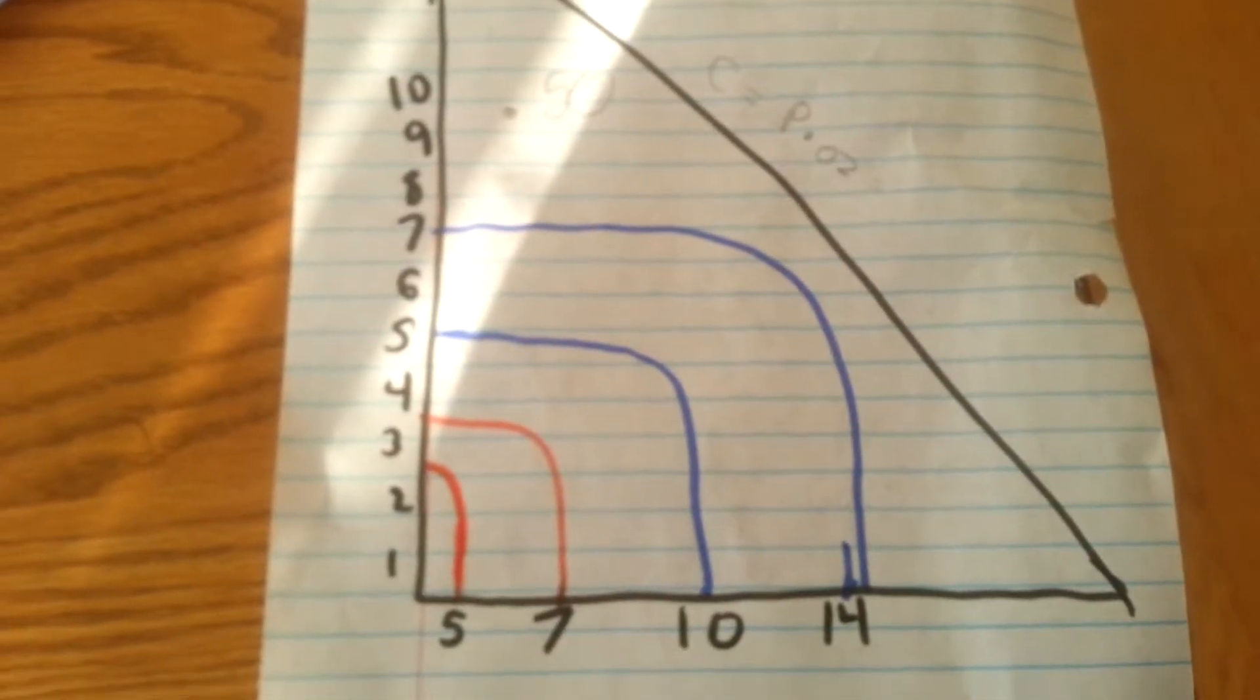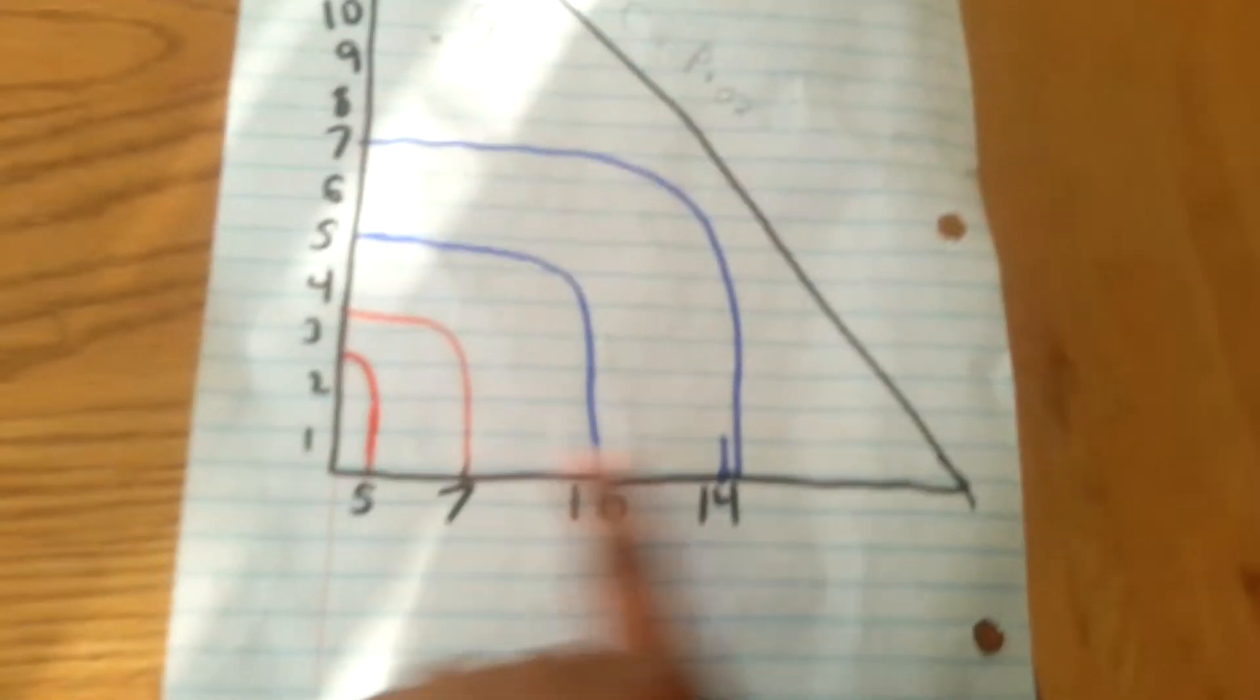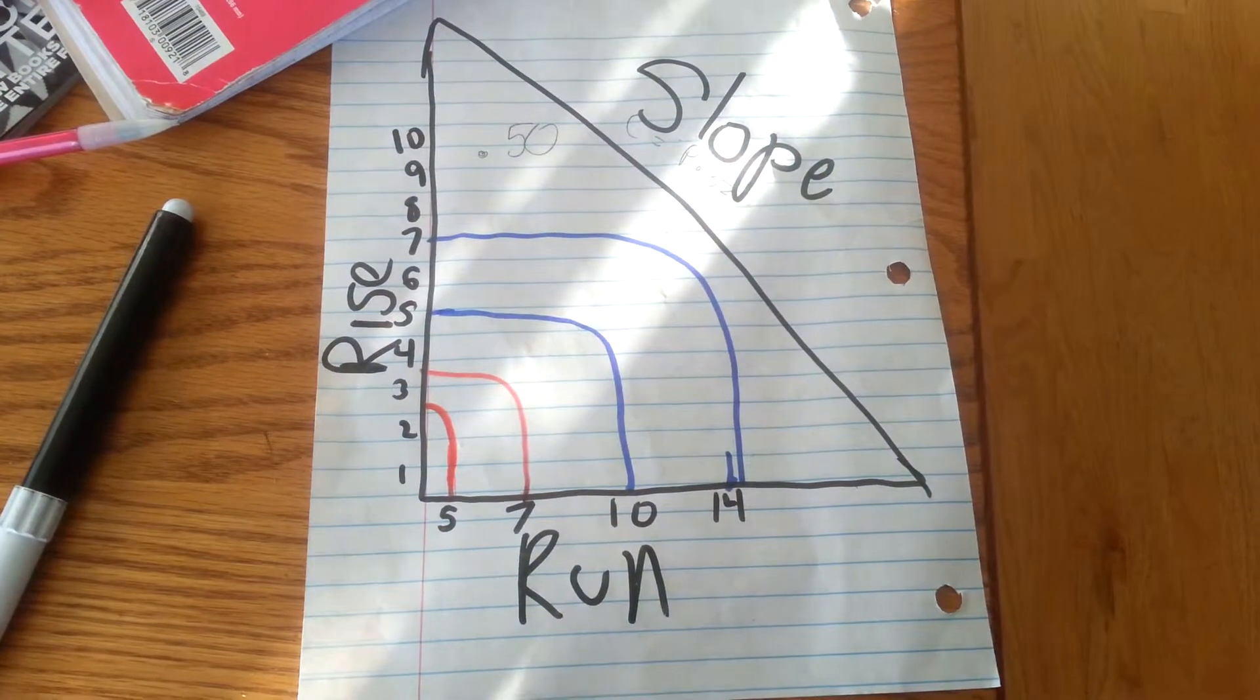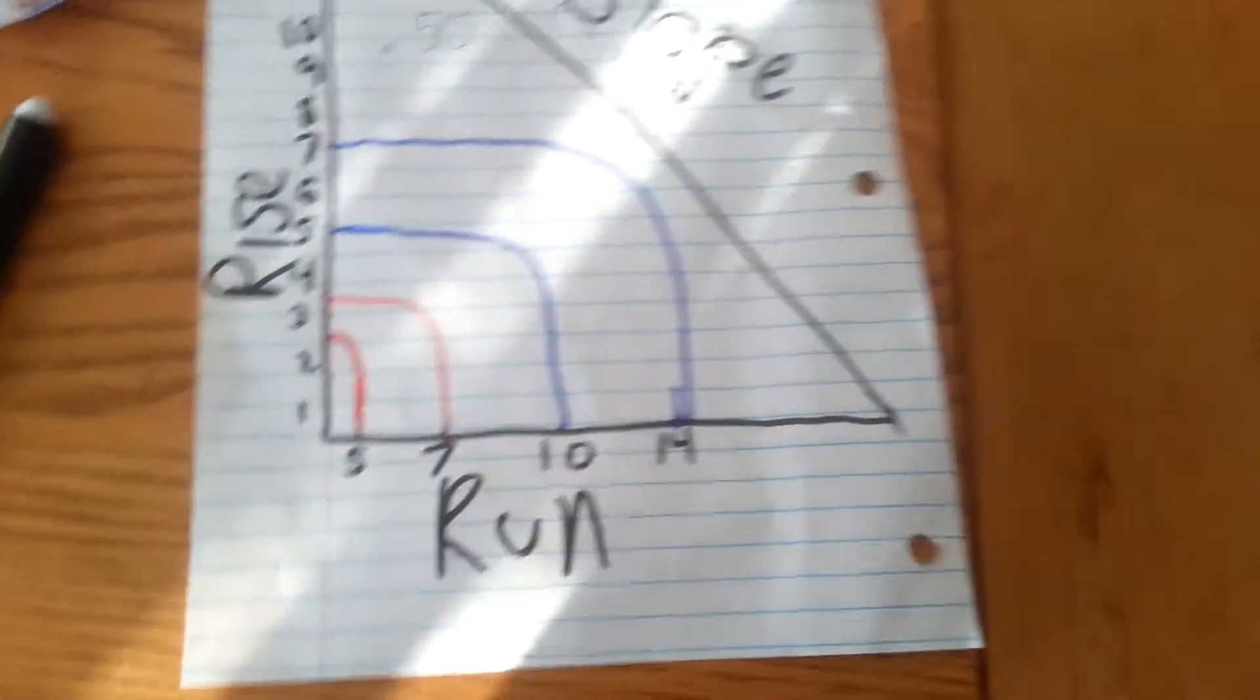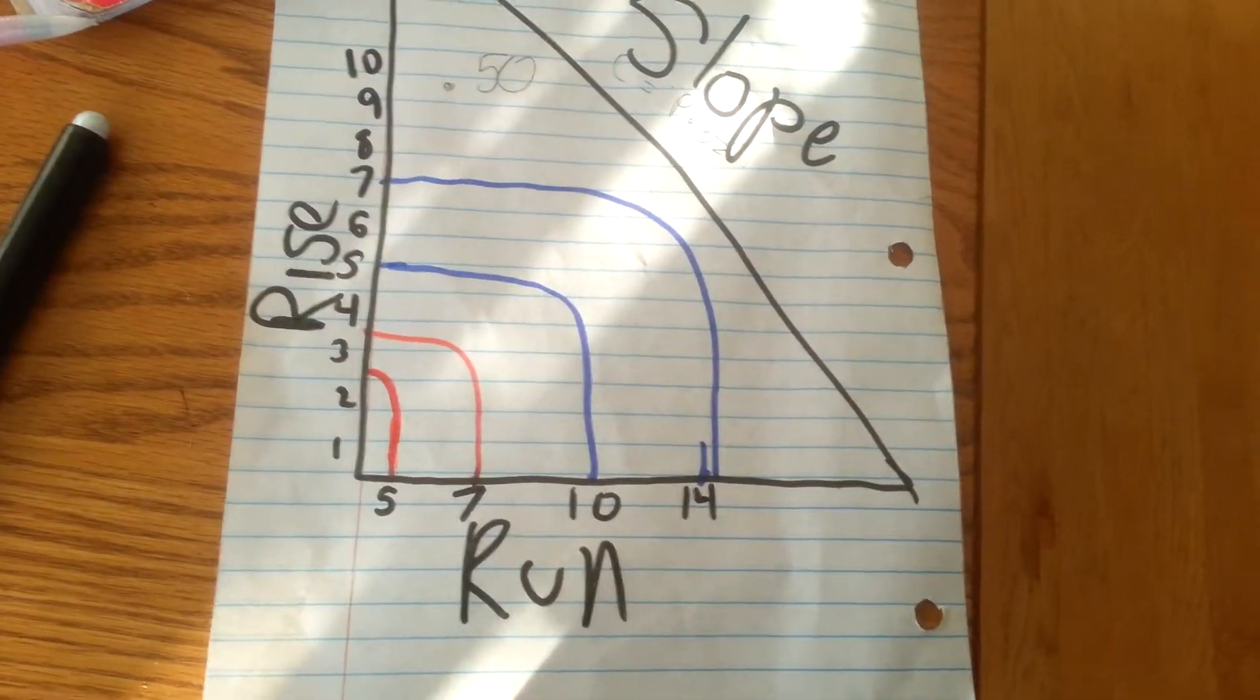Now here is our graph. Otherwise, if you were looking for unit rate, rise, run, slope. Or you can just remember RRS for rise, run, and slope.